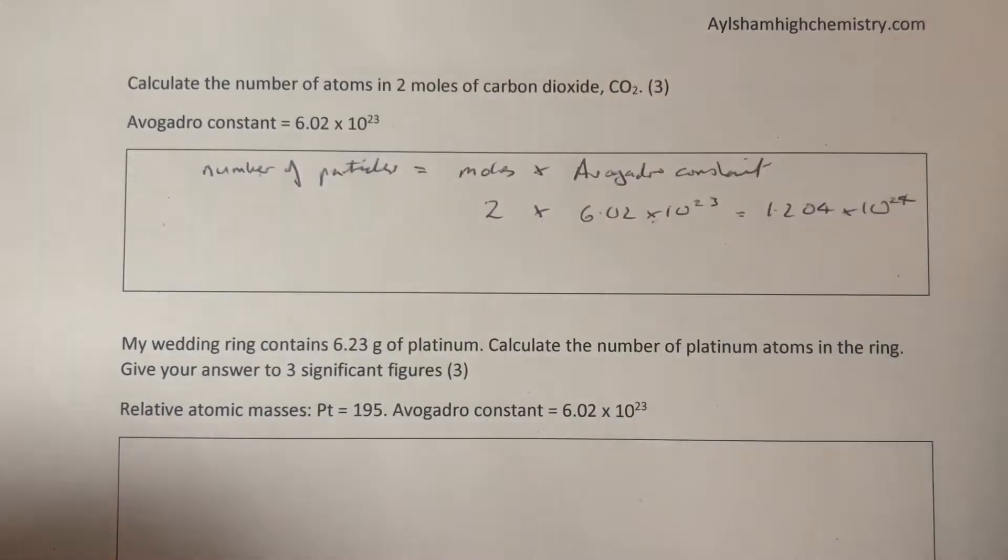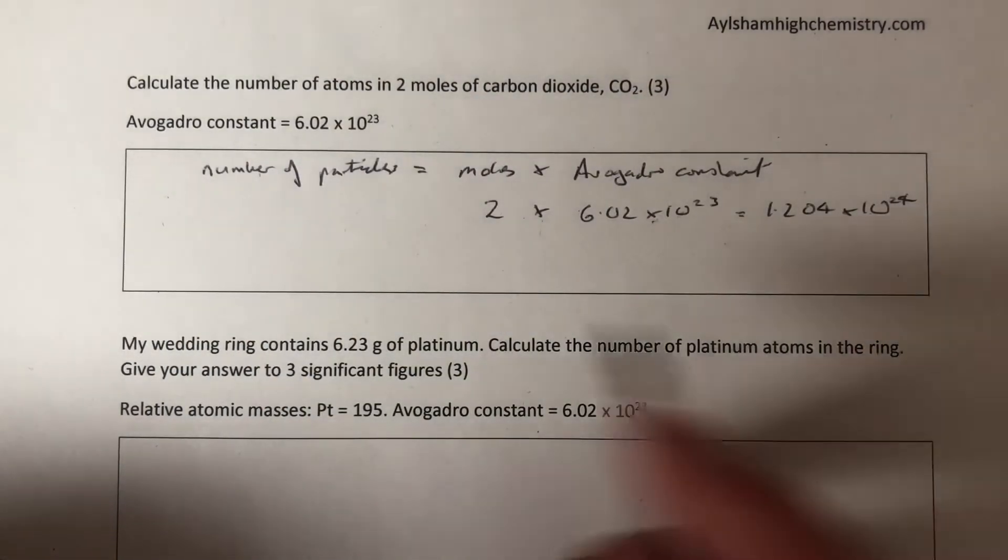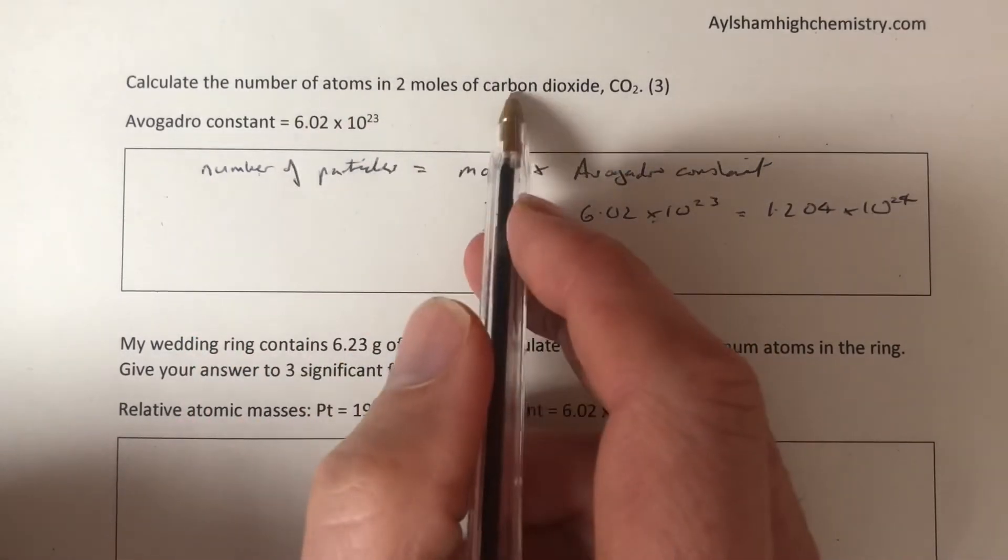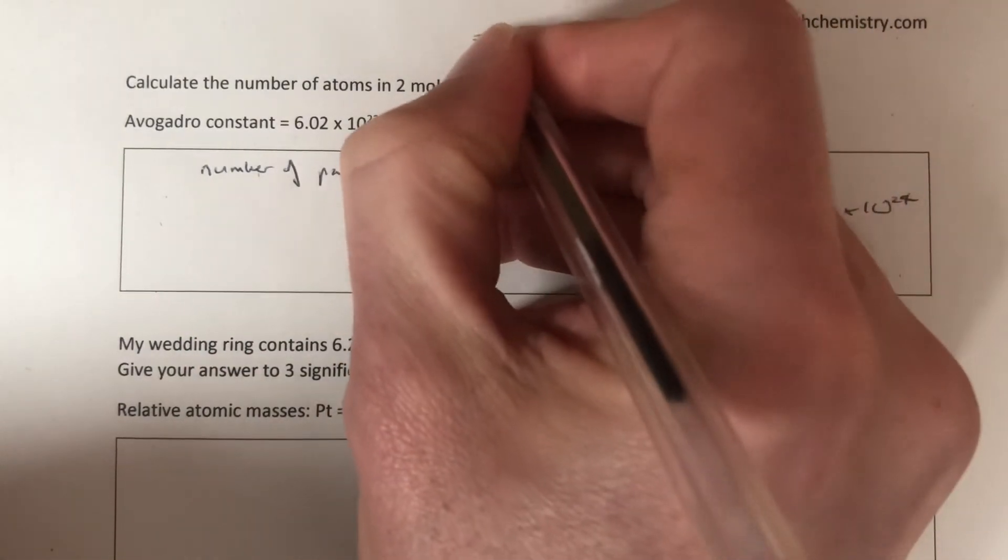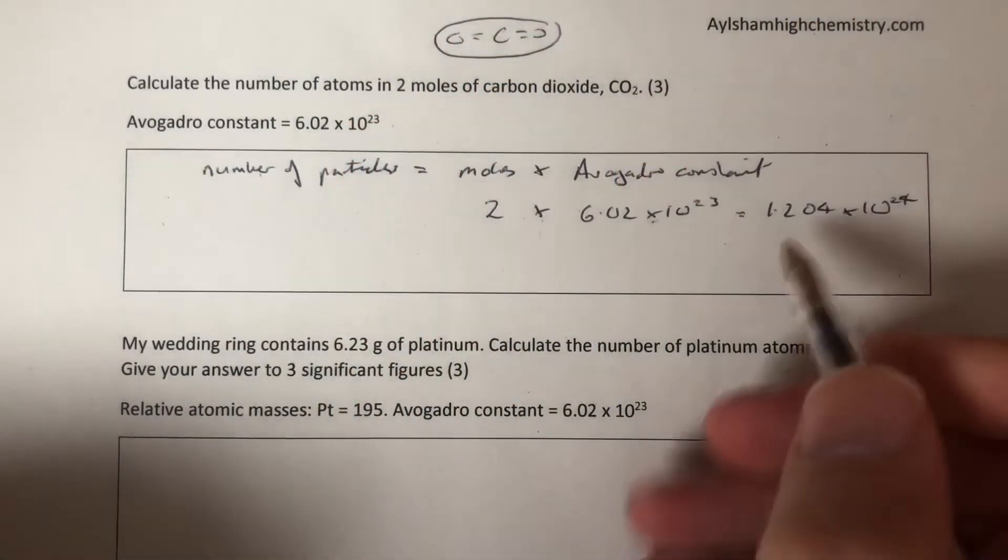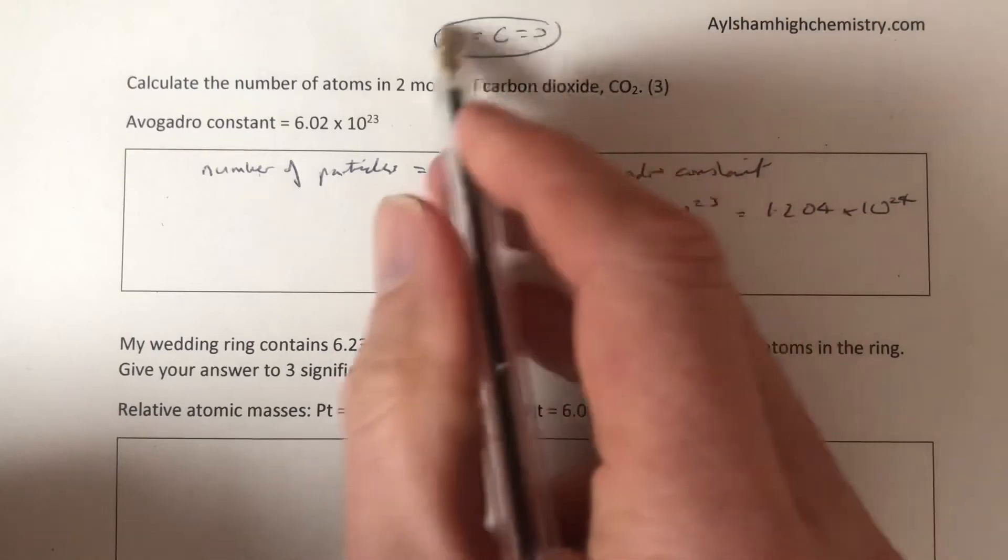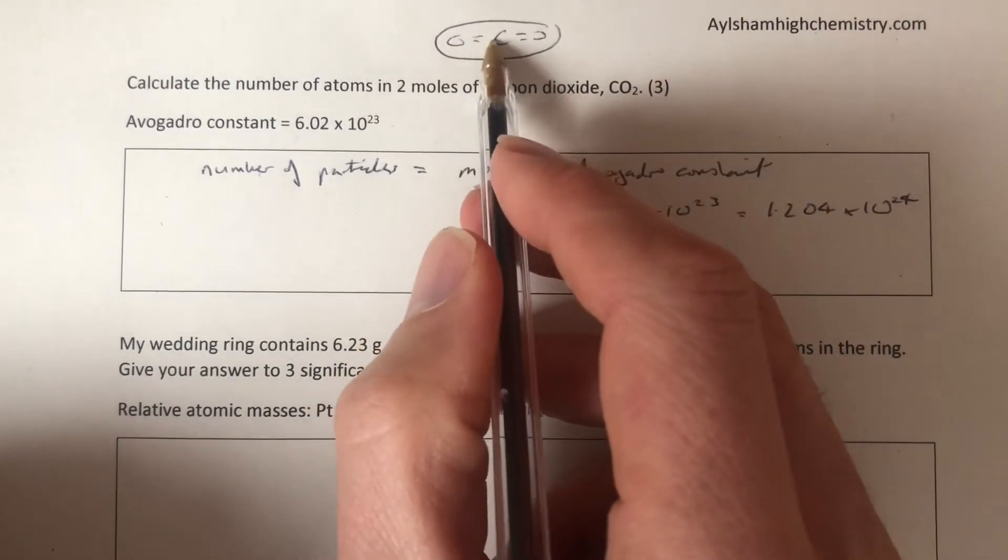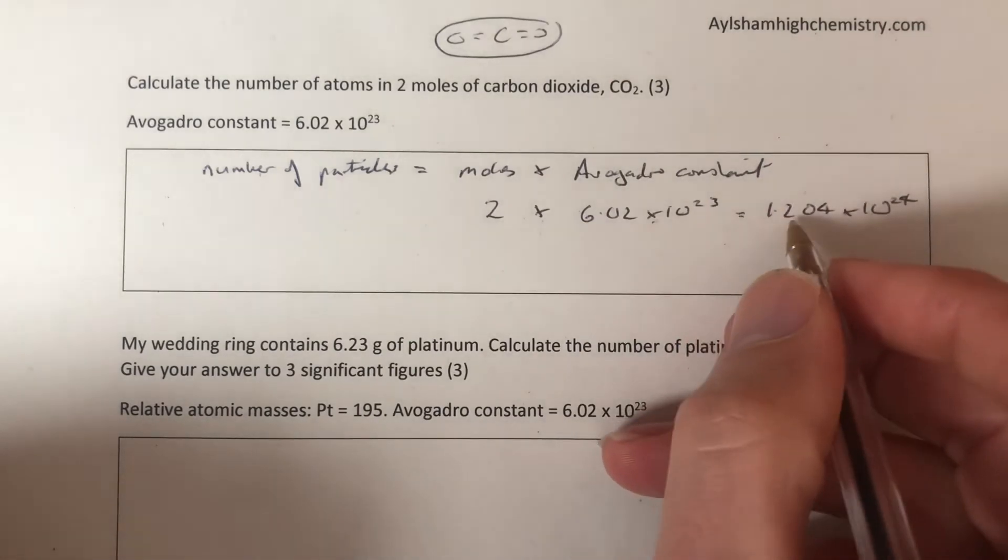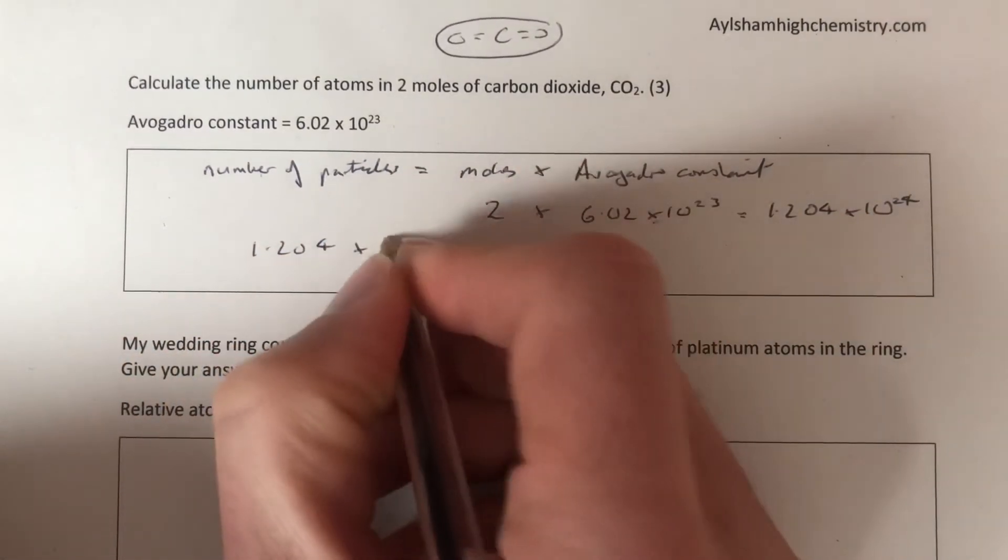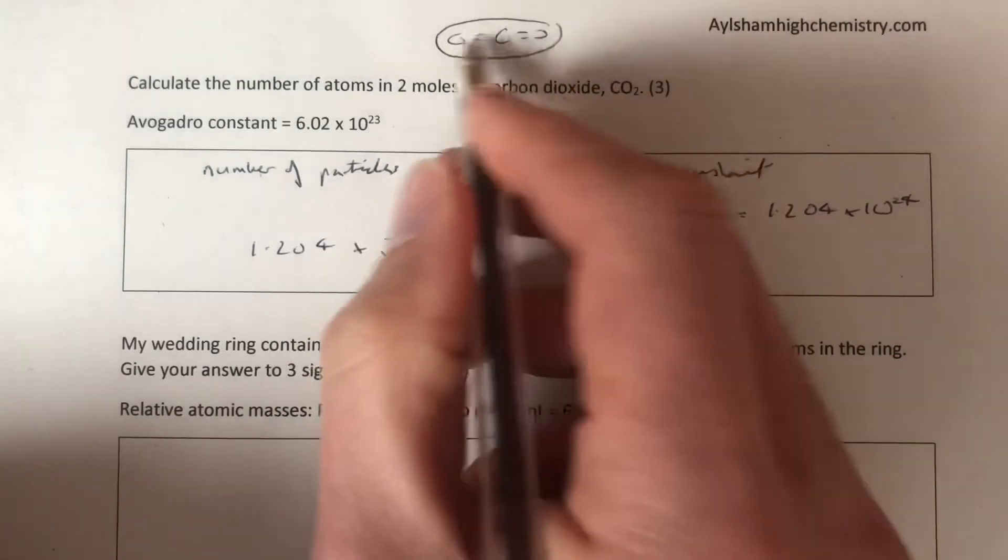Before you think that's the answer, it's not, because that tells us the number of molecules in this case. Carbon dioxide is a molecule. This tells us there's 1.204 times 10 to the 24 molecules of carbon dioxide. Now in a molecule of carbon dioxide there's one, two, three atoms, so you need to take this number 1.204 and multiply it by three because there's one carbon and two oxygens.